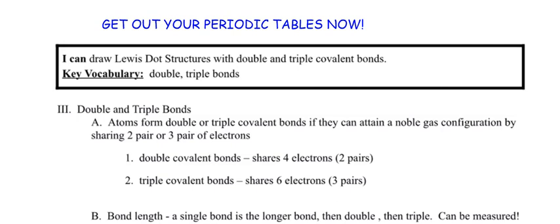Atoms form double or triple covalent bonds if they can attain a noble gas configuration by sharing two pairs, which is four electrons, or three pairs, which is six electrons. So a double covalent bond has four shared electrons between them, and a triple bond has six electrons between them.